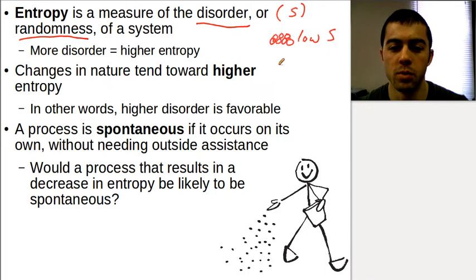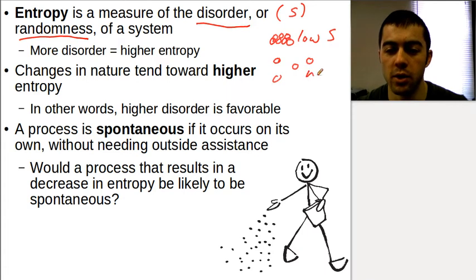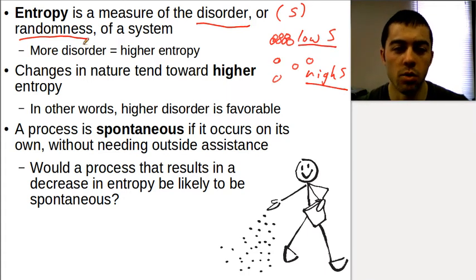A high entropy would be something that's disordered, more random and all over the place — kind of like scattered particles — this would be a higher entropy value. So if something is disordered or random or scattered all over the place, that would be high entropy. And if something is more structured or ordered, that would be low entropy. More disorder means higher entropy.